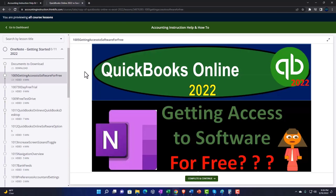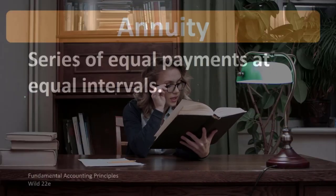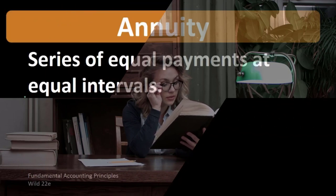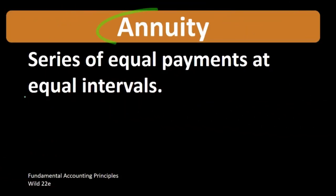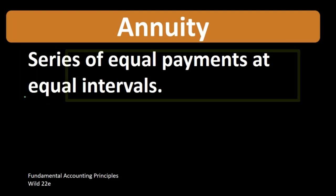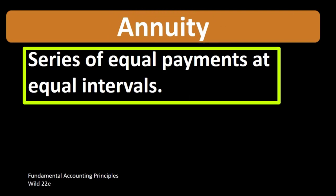According to Fundamental Accounting Principles, Wild 22nd edition, the definition of annuity is a series of equal payments at equal intervals. There are different situations where we would have an annuity — a series of payments.